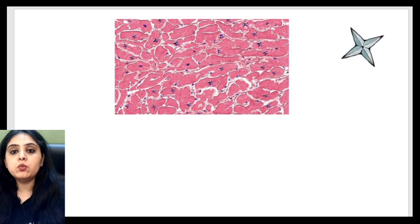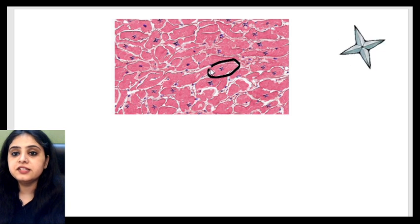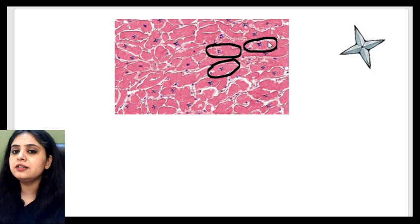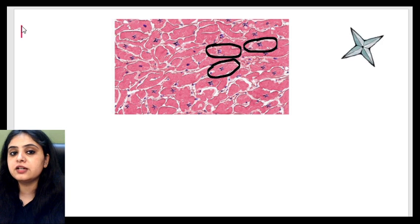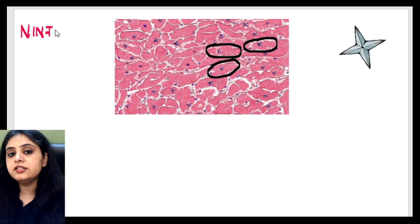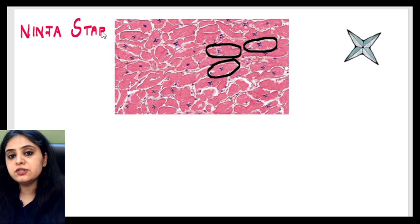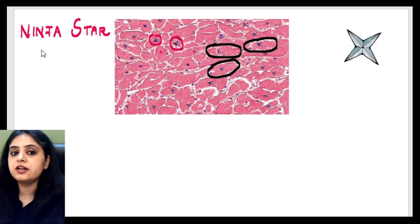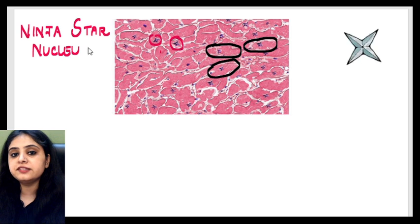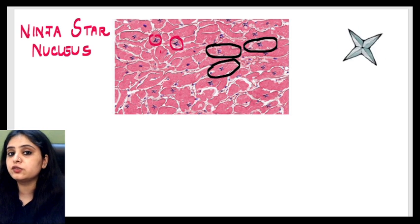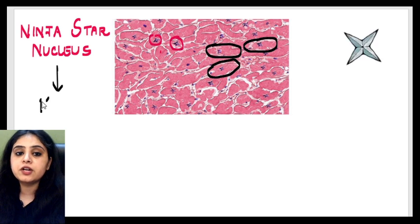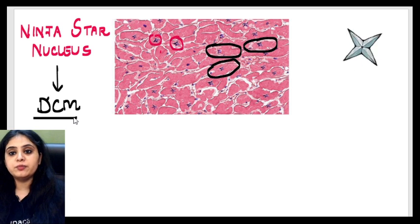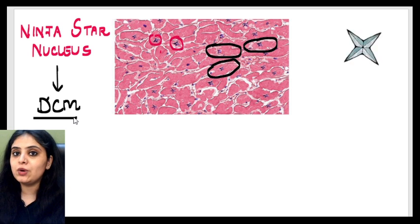This is image number one, where you can see cardiac fibers. Inside these cardiac fibers, the nuclei have a slightly different morphology. And what is that morphology? With the GIF shown here, this is the ninja star nucleus. If I highlight the nucleus, you can see it right here. This ninja star nucleus is seen in a type of cardiomyopathy — specifically, dilated cardiomyopathy.